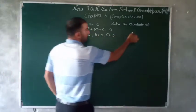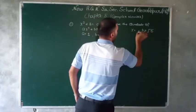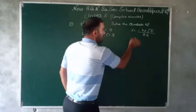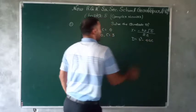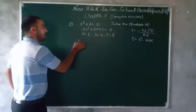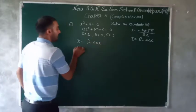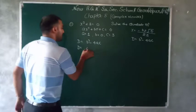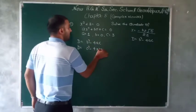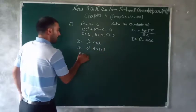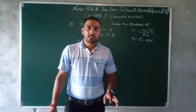Formula है: x = (-b ± √D) / 2a, and D = b² - 4ac। सबसे पहले D निकालते हैं: D = (0)² - 4(1)(3) = 0 - 12 = -12। D की value आई minus 12।